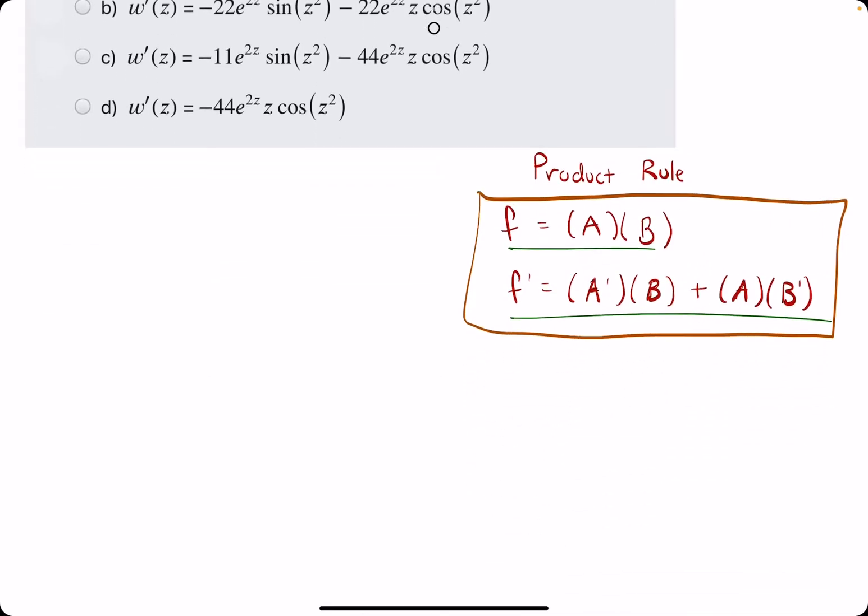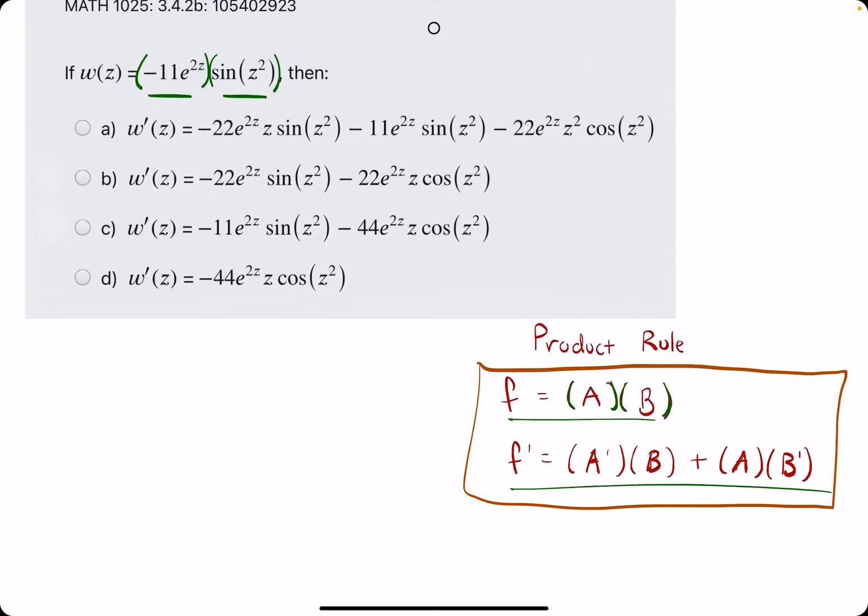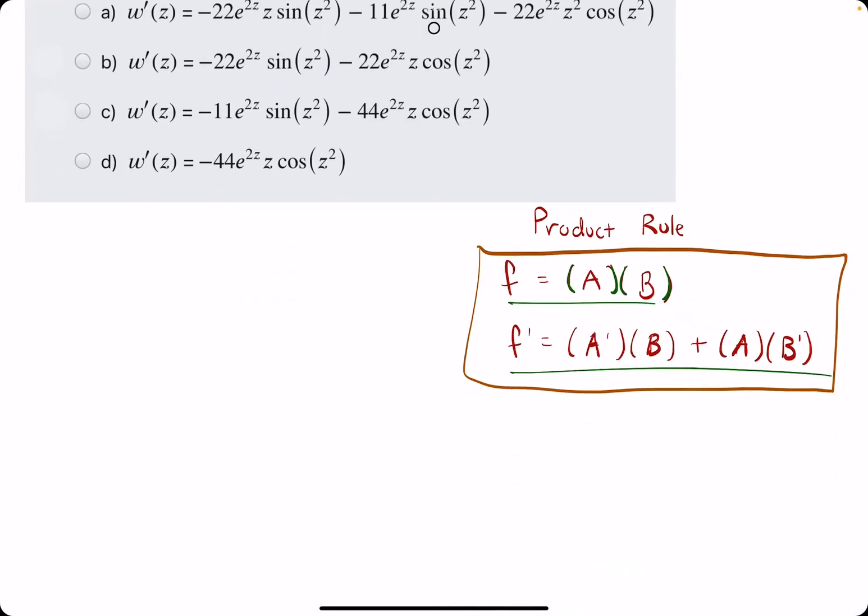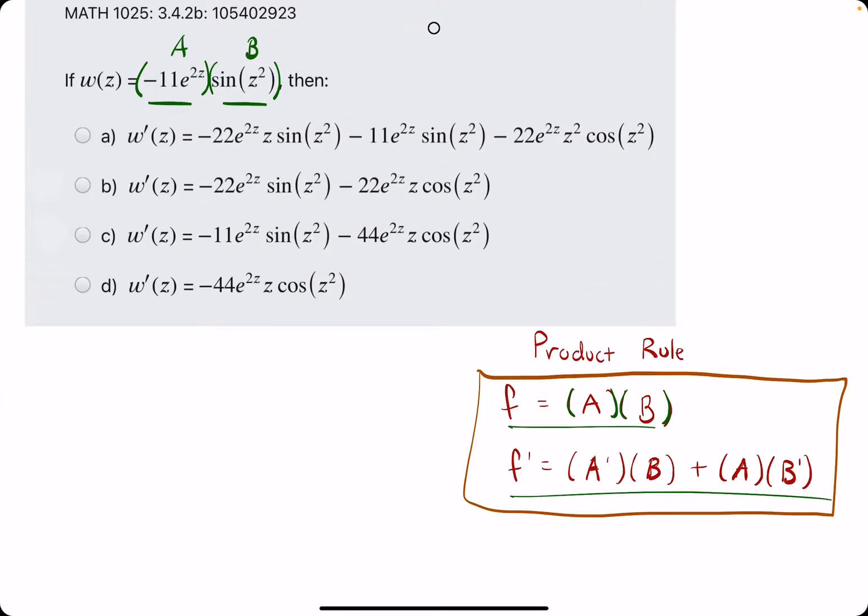The idea is if we can split it up as some A times some B, then we can find the derivative by finding A prime, the derivative of the first part, and B prime, the derivative of the second part, and then arranging all the terms or expressions in this way. Let's jump right into it.